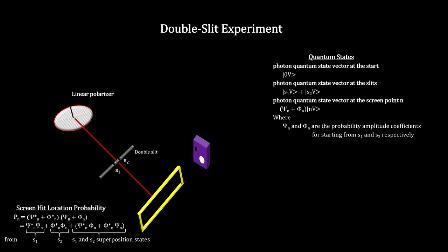We square the wave functions to get the probabilities. We see that the probability of hitting any particular point on the screen has four components. One is for photons going through S1, one is for photons going through S2, and two are for the photons going through both.